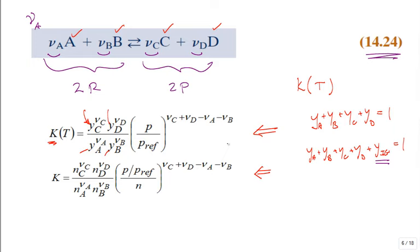What about this P? P stands for pressure. And P_ref is the reference pressure — atmospheric, 1 ATM. So everything is benchmarked around 1 ATM. If you increase pressure above that, P divided by 1 ATM gives you that ratio. And then this exponent is the sum of those stoichiometric coefficients — it's the sum over all products minus the sum over the reactants.